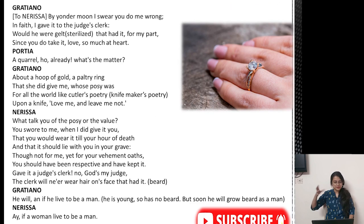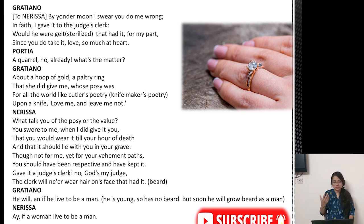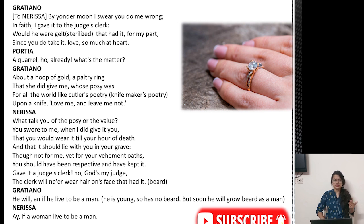Now something is happening between Graziano and Nerissa. Graziano says: by yonder moon I swear you drew me wrong — I am swearing by the moon that you are doing something wrong. In faith, I gave it to the judge's clerk, who would jest. That person kept records for the judge — that is the person to whom I had given my ring. Graziano even hopes that that person gets sterilized — castrated, meaning that person is not really a man.